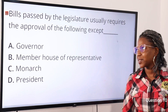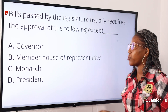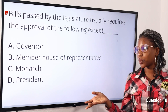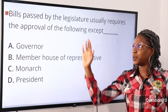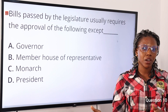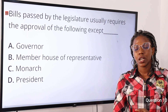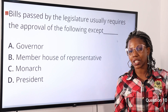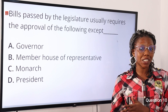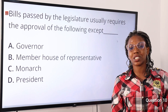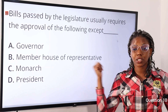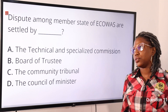Question ten: bills passed by the legislature usually require the approval of the following except — option A: governor, option B: member of the house of representatives, option C: monarch, option D: president. The answer is option B, member of the house of representatives. Bills require executive approval from the president, monarch, or governor before becoming law. There are seven procedures for a bill to become law, and the last stage — assent — involves executive approval.